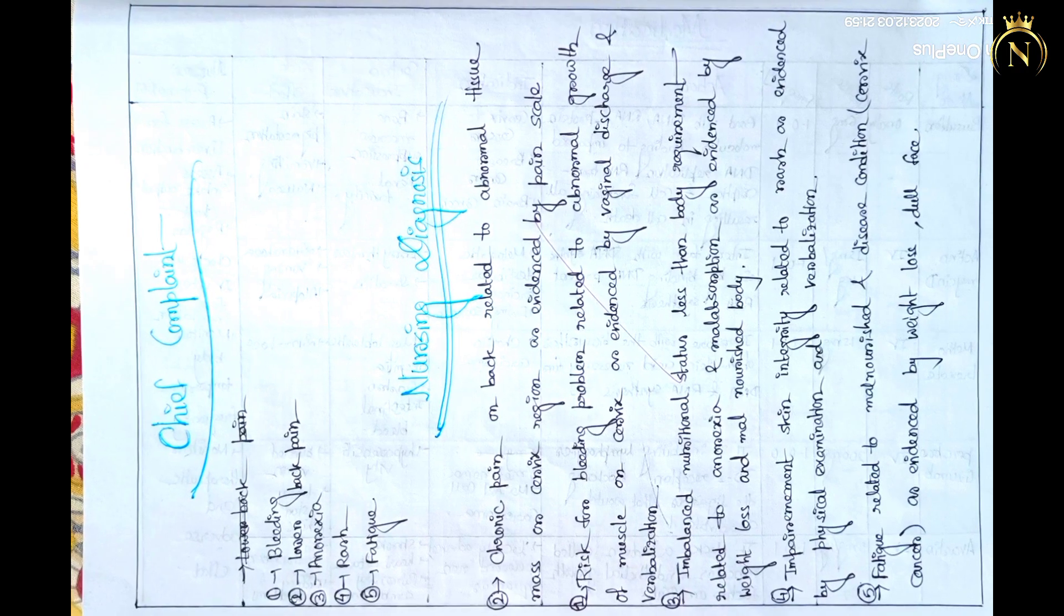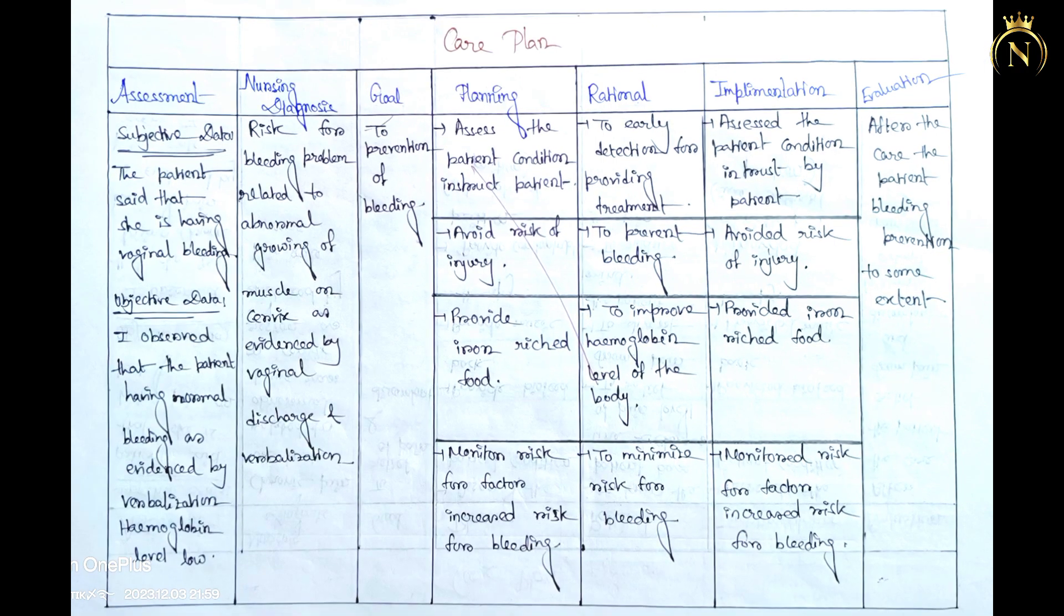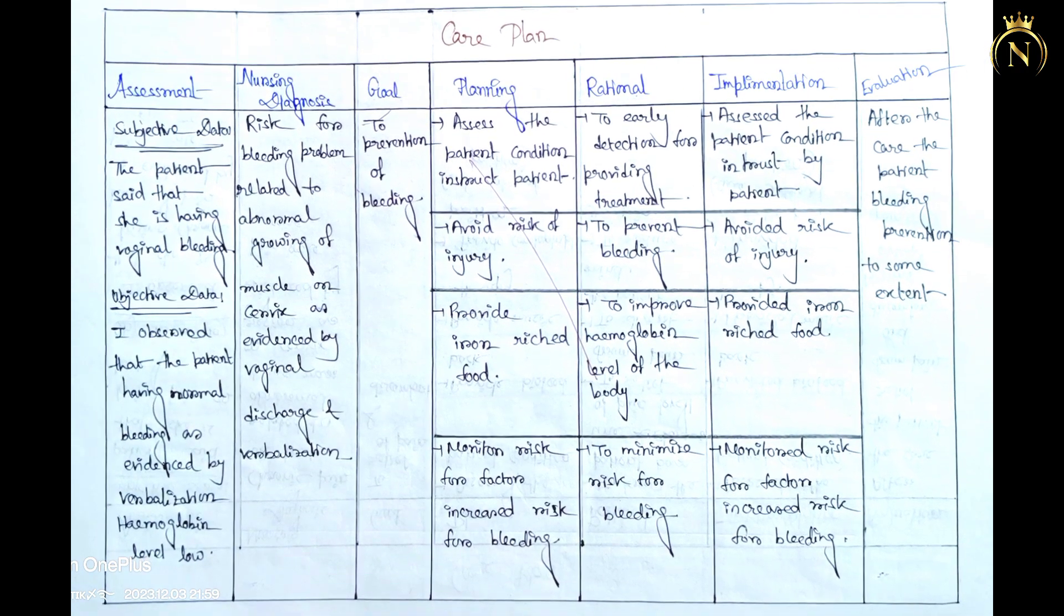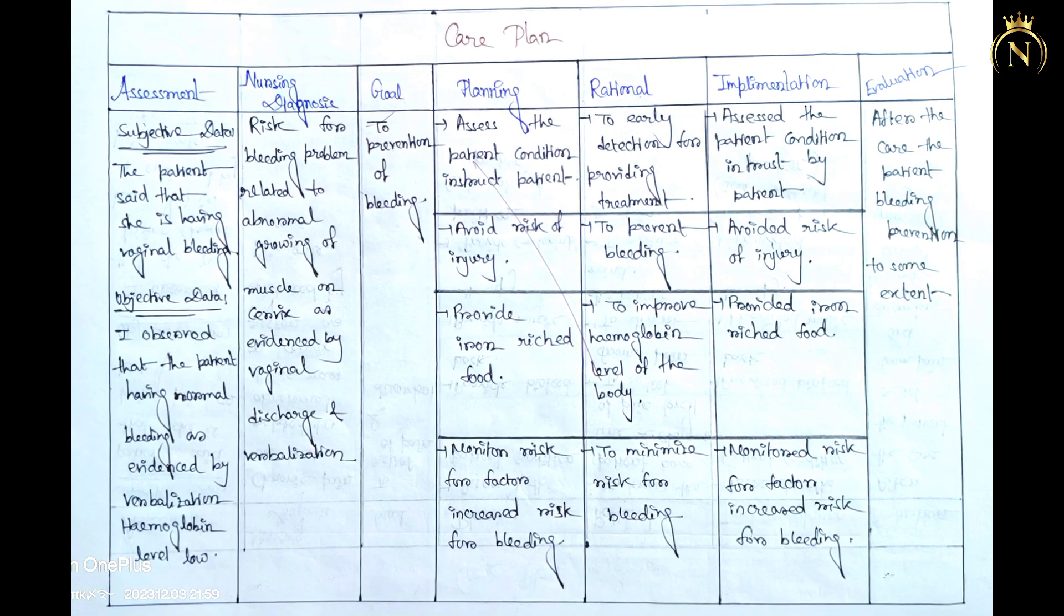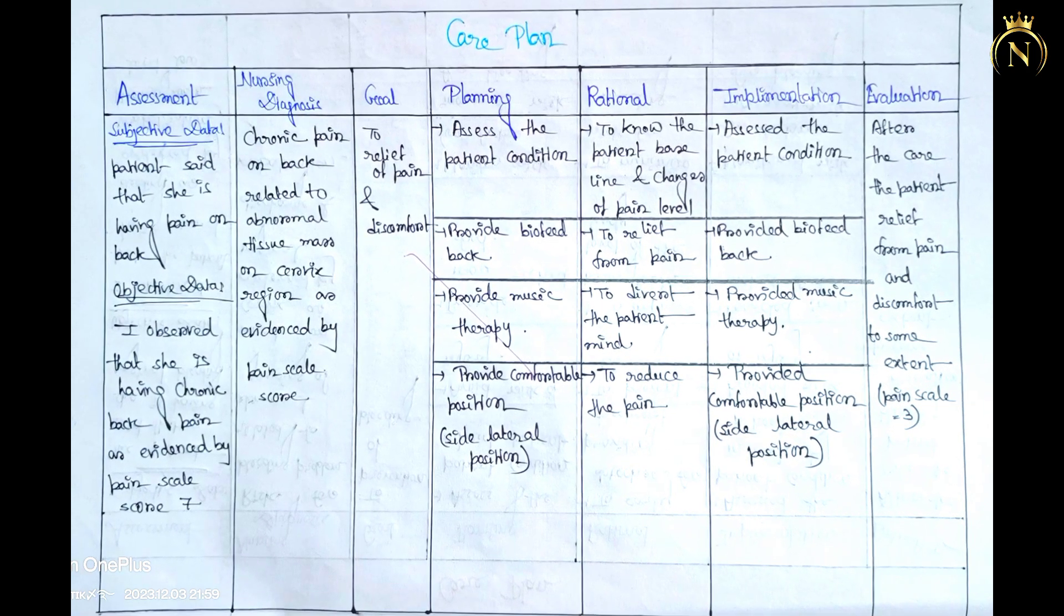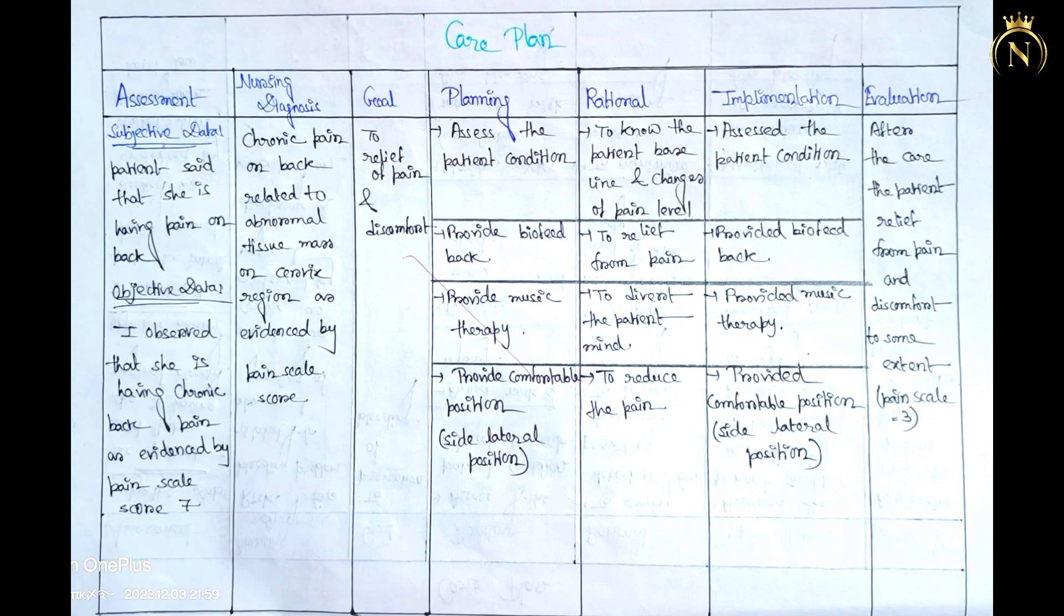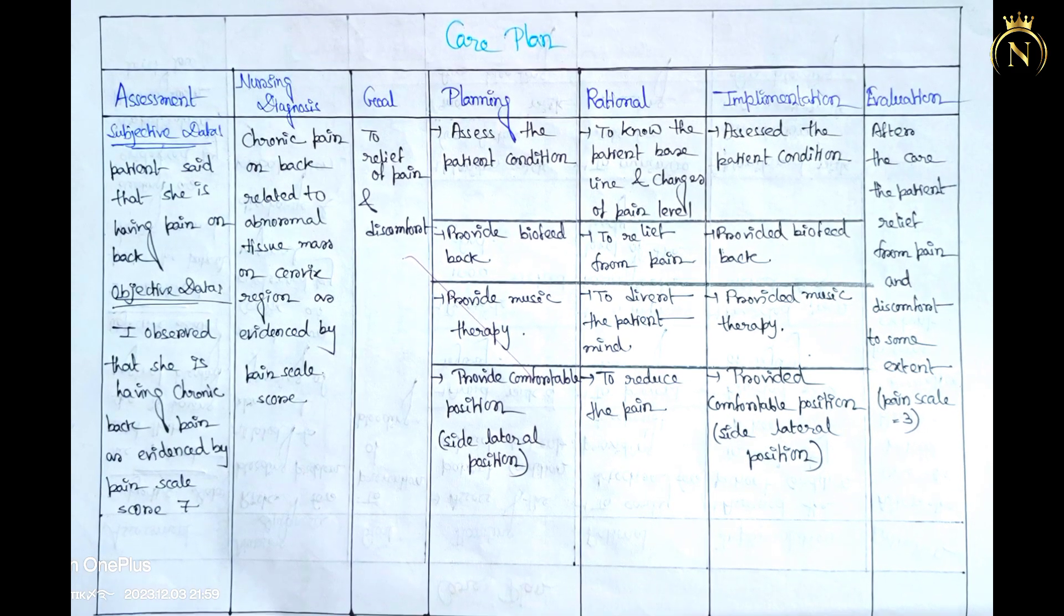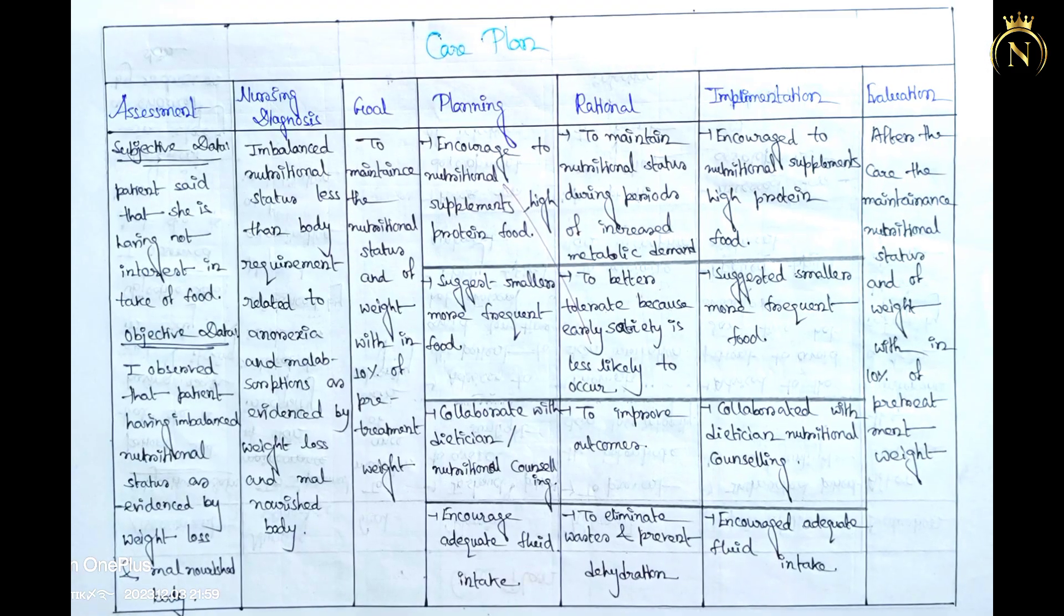After that, depend on the disease condition you have to mention what are the chief complaints the patient is having. Depend on the chief complaint you have to mention nursing diagnosis. According to the diagnosis you have to make each diagnosis one nursing care plan. In that care plan you have to make the patient assessment, diagnosis, goal, planning, implementation, and evaluation.